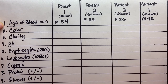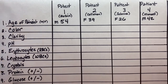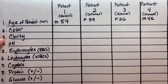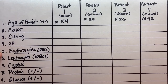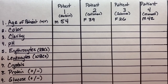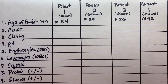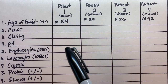So these are the parameters: we have the age of the patient, the color of the urine, the clarity, the pH of the urine, erythrocyte presence — meaning red blood cells — leukocyte presence — meaning white blood cells — whether there are crystals present, whether there is protein, and whether there is glucose present in the urine as well.